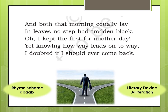The rhyme scheme in this third stanza is again ABAAB, decided by the last words of each line: 'lay', 'black', 'day', 'way', and 'back'. The literary device here is alliteration. In the line 'Oh, I kept the first for another day', the consonant letter F is repeated: 'first' and 'for' both start with F. When the same consonant letter is repeated continuously in different words in a line, the device is alliteration.